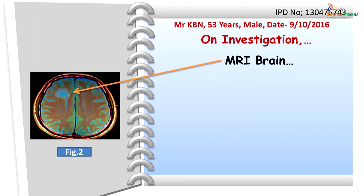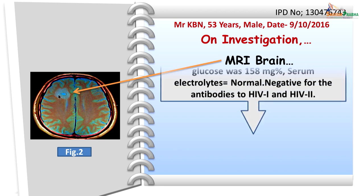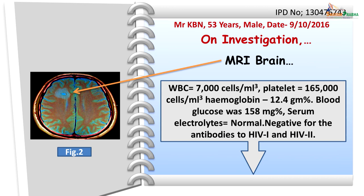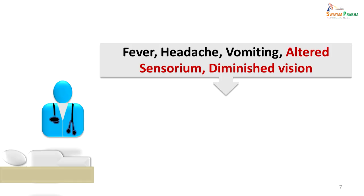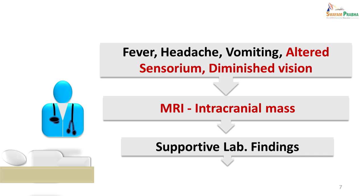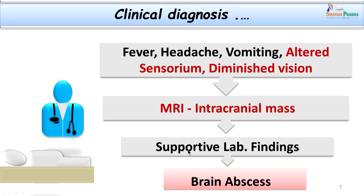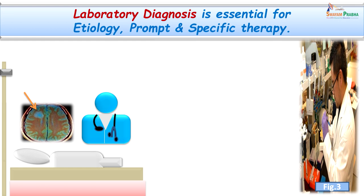We went ahead and did a brain MRI which showed a space-occupying lesion. These were the supportive laboratory findings, indicating a chronic infection. The patient had fever, headache, vomiting, altered sensorium in the form of altered speech, weak motor reflexes, and diminished vision. MRI gave us the important finding of a space-occupying lesion, and supportive lab findings were also in favour of this diagnosis. The diagnosis is brain abscess.